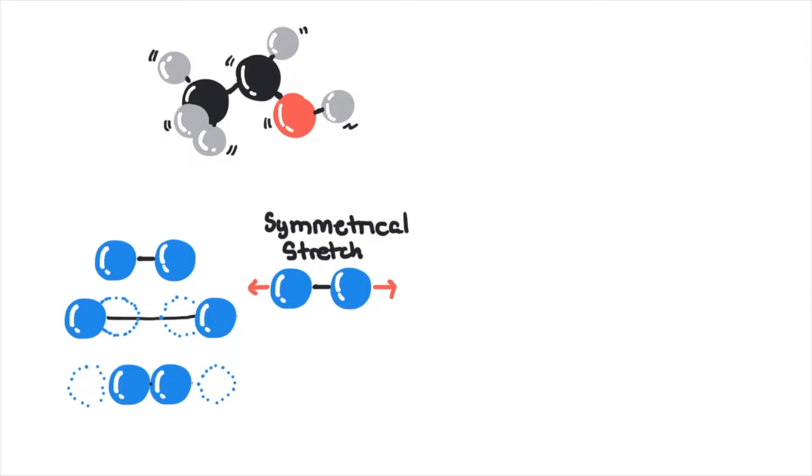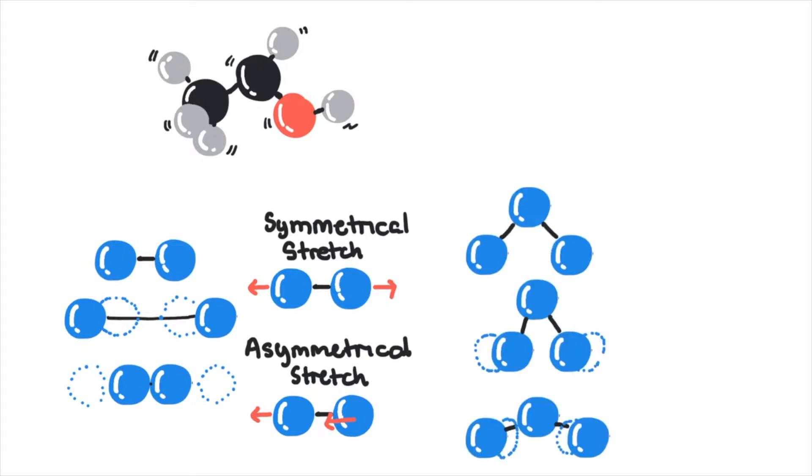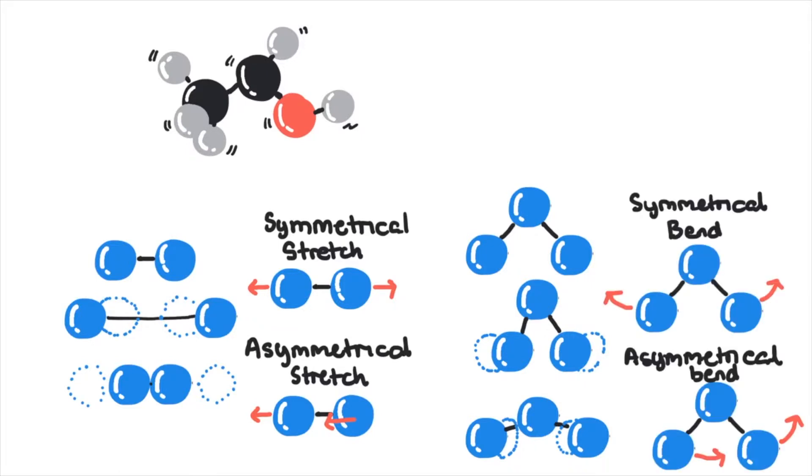These vibrations can be symmetrical, moving in unison, or asymmetrical, with an alternating stretching movement. In polyatomic molecules, you can also have bending of the covalent bonds. These can also be symmetrical or asymmetrical types of bending.